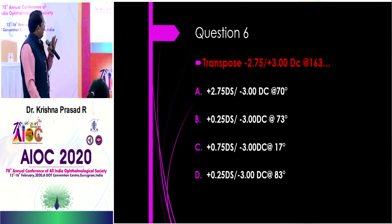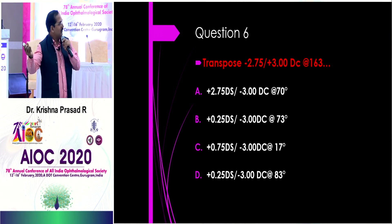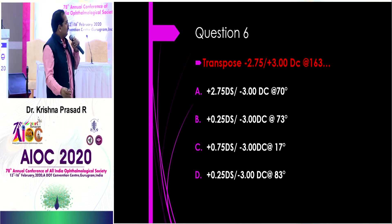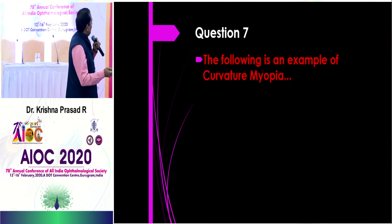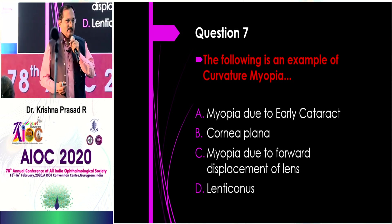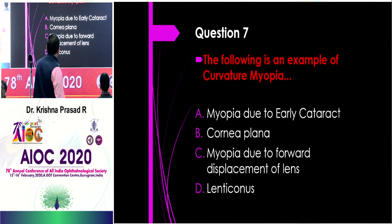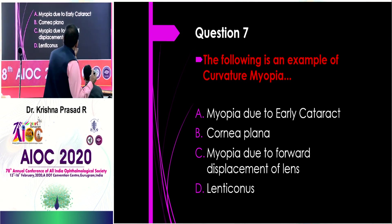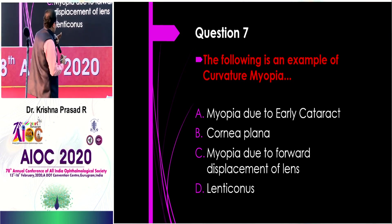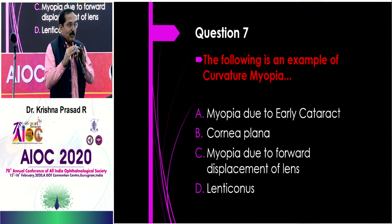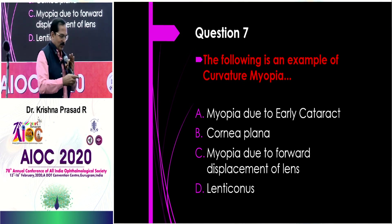Question 6 to Rashmin's team: transpose a given prescription. The sphere becomes plus 0.25, the cylinder value changes sign, and the axis becomes the perpendicular — 163 degrees. Question 7 to Santosh's team: what is curvature myopia? There are different types: index myopia is due to early cataract, positional myopia is due to forward displacement of the lens, and curvature myopia is due to excessive curvature — as in keratoconus, lenticonus, or keratoglobus. Cornea plana, by contrast, leads to hypermetropia.